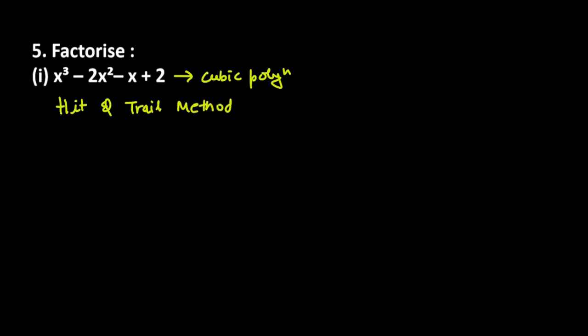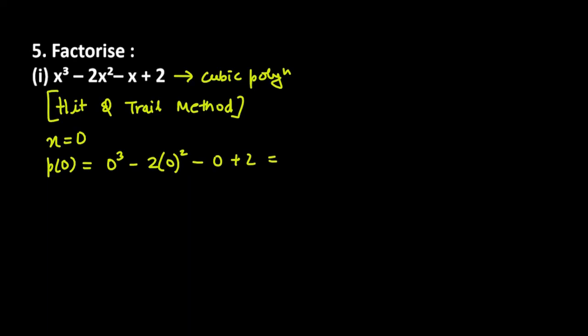In the hit and trial method, we need to find the first factor ourselves. We try values like 1, 2, 3, or negative numbers to see which value makes the polynomial equal to 0 — that will be a factor. So let's check x = 0: it gives 0 cube minus 2 times 0 square minus 0 plus 2. The first three terms become 0, but the last term is 2, so 0 is not our factor.